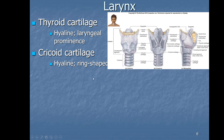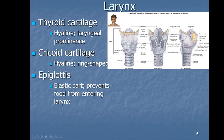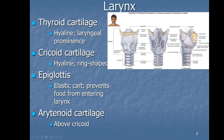The cricoid cartilage is a complete ring going all the way around. The large flap called the epiglottis is made of elastic cartilage and flips down when you swallow to prevent food from entering the larynx and causing choking. Then we have the arytenoid cartilages — two small globular pieces of cartilage that attach to the vocal cords.